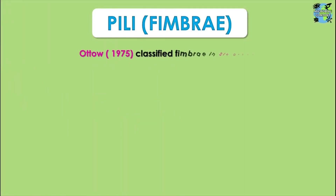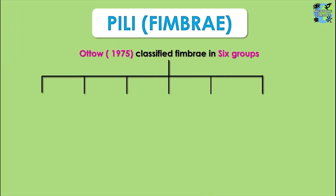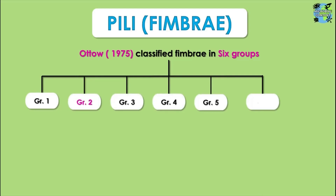These pili were classified by Otto in six groups in 1975. According to Otto there are six types of pili — groups 1, 2, 3, 4, 5, and 6. Group 2 contains a very specific type of pili known as sex pili, which are totally different from most other groups.